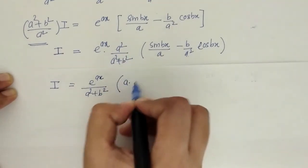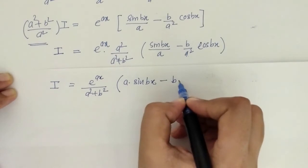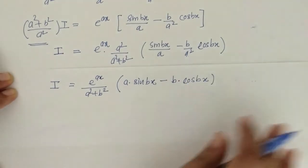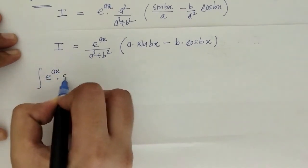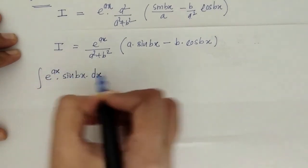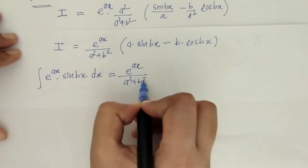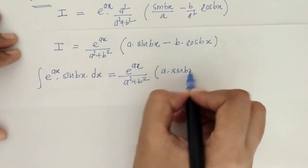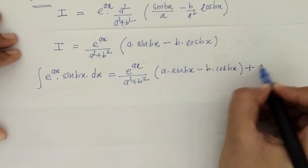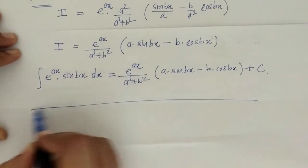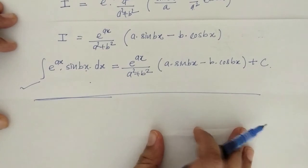Taking a² inside the bracket, with a² cancelling where appropriate, we arrive at: I = e^(ax)/(a² + b²) · [a·sin(bx) − b·cos(bx)] + C. Here a and b are constants, and C is the integration constant.